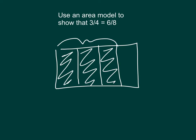We want 3 fourths, so let's shade in 3 fourths. So, what we've modeled here is 3 fourths. Now, we're trying to get to eighths. To go from fourths to eighths, we just draw 1 horizontal line. So that now we have eighths — 1, 2, 3, 4, 5, 6 eighths.